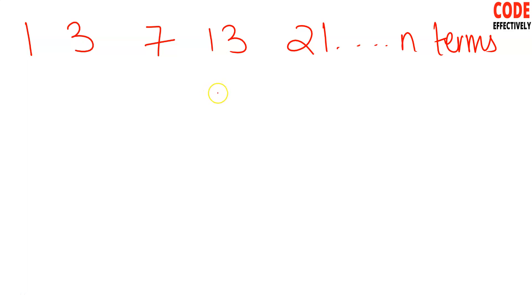Welcome back to your channel Code Effectively. Today's video is about how we can print this series. You can see it is 1, 3, 7, 13, 21 up to n terms.